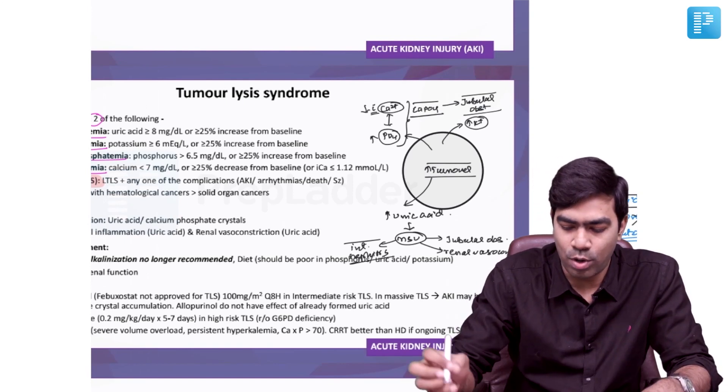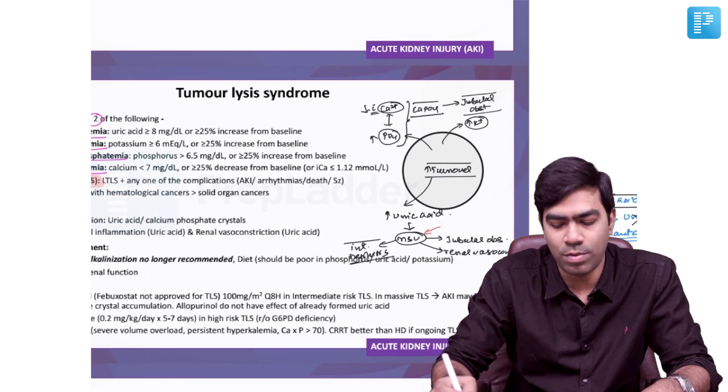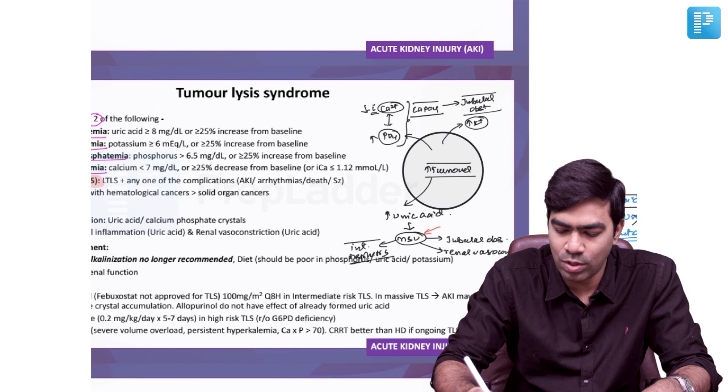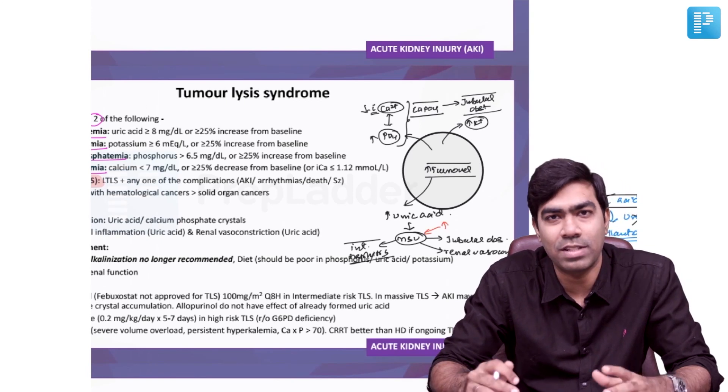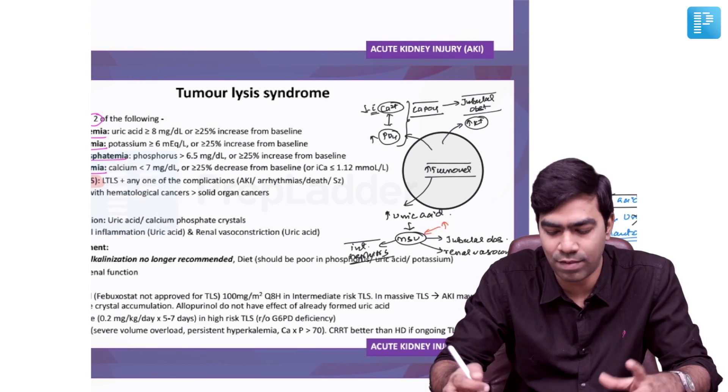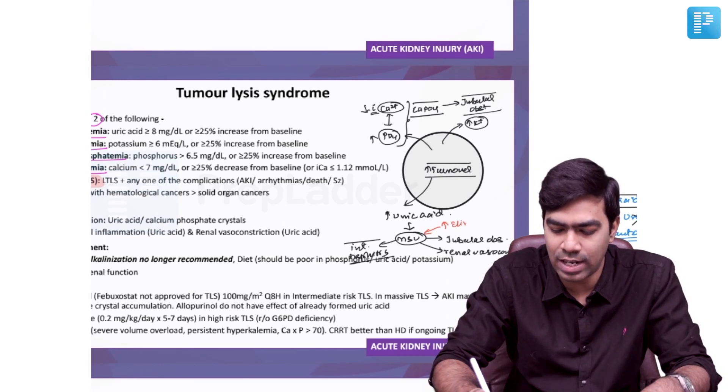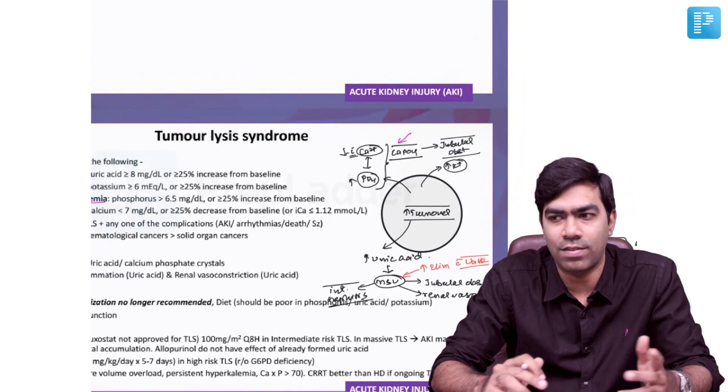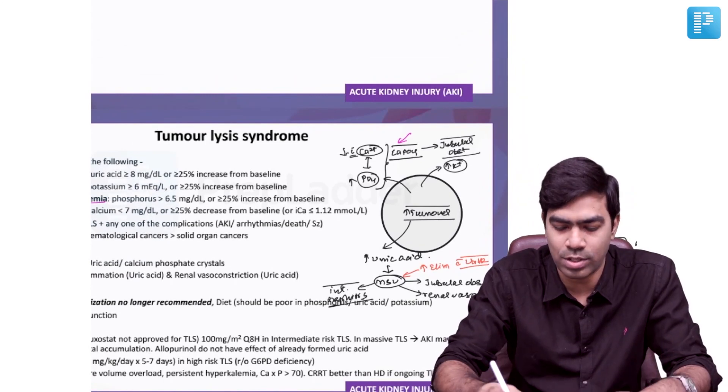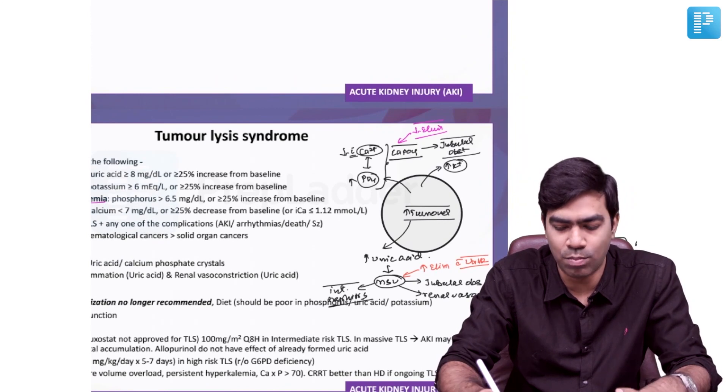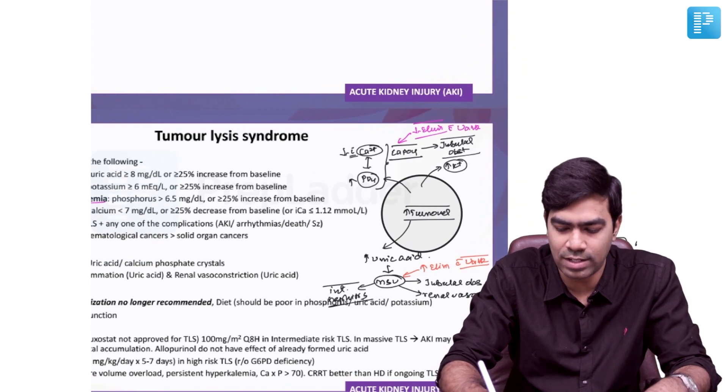One important point: monosodium urate crystals can be eliminated with urinary alkalinization, which means they precipitate less with alkaline environment and dissolve more. So you can increase elimination with urinary alkalinization. But calcium phosphate does not work like this. In fact, it works in the exact opposite direction. The elimination decreases and they precipitate more with urinary alkalinization.